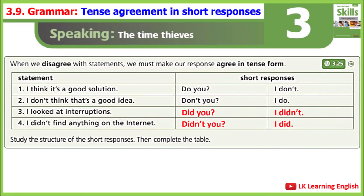3.25, Grammar Box 16. One: 'I think it's a good solution.' 'Do you? I don't.' Two: 'I don't think that's a good idea.' 'Don't you? I do.' Three: 'I looked at interruptions.' 'Did you? I didn't.' Four: 'I didn't find anything on the internet.' 'Didn't you? I did.'